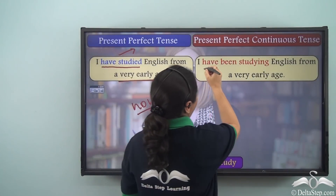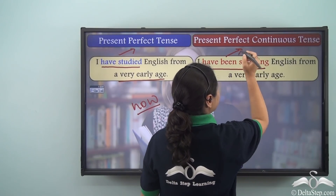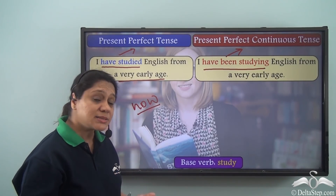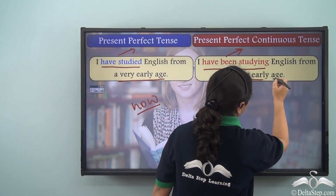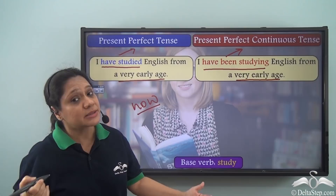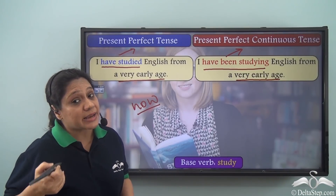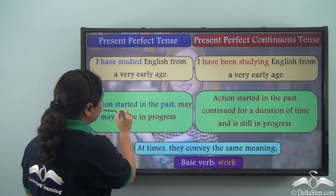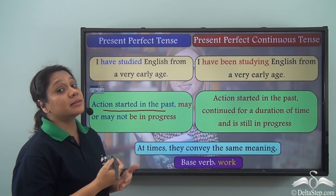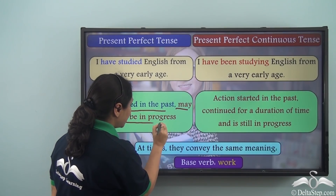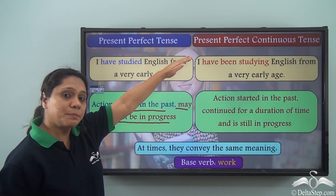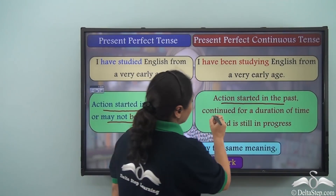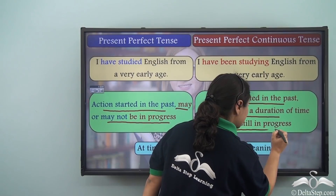'I have been studying English' is in the present perfect continuous tense. It always means that an action started in the past — I started studying English at a very early age — I have continued studying English, and I still study English now. So the present perfect tense tells us that an action started in the past and may or may not be in progress, whereas the present perfect continuous tense always means that an action started in the past, continued for a duration of time, and is still in progress.